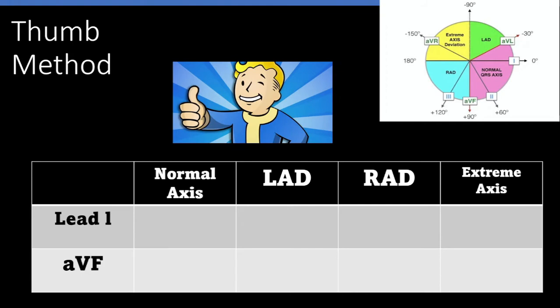If the QRS is mostly positive, you put that thumb up. And if the QRS is mostly negative, you put that thumb down. For normal axis, lead one is positive, so put your left thumb up, and AVF is also positive, so put your right thumb up. Two thumbs up, your axis is good. For left axis deviation, lead one is positive, so put your left thumb up. AVF is negative, so put your right thumb down. Your thumbs have left each other, so left axis deviation.